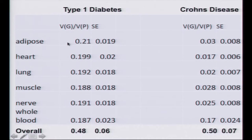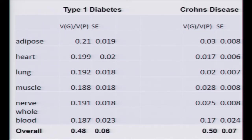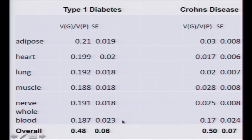Across the board for type 1 diabetes, you see this regulatory architecture concentrating heritability. It's essentially the same set of SNPs regulating the same set of genes — shared regulatory architecture across all of these tissues. But for Crohn's disease, it's a completely different pattern. You see concentration of heritability in whole blood, which has all those cells important in inflammatory disease, but not much concentration across other cell types. The key take-home is that it's not eQTL-ness per se — it's the very same set of eQTLs concentrating heritability for type 1 diabetes and failing to concentrate it for Crohn's disease.